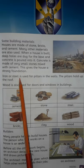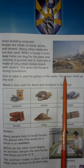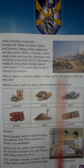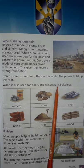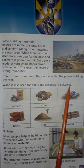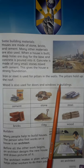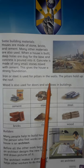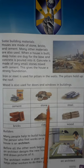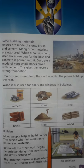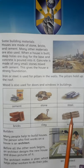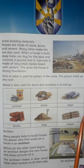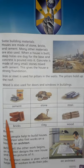Iron or steel is used for pillars in the wall — the pillars hold up the roof. Wood is also used for doors and windows. In buildings, houses are made of many things: concrete, cement, stone, steel, bricks, clay, and wood are some of them. Wood is used to make furniture and doors; bricks are used to make walls.